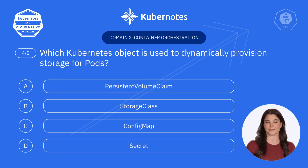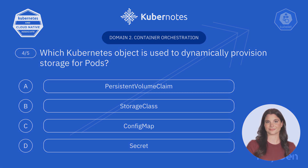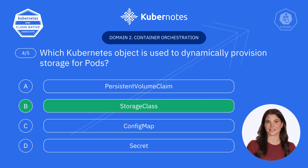Question four: Which Kubernetes object is used to dynamically provision storage for pods? A. Persistent volume claim. B. Storage class. C. Config map. D. Secret. The answer is B — Storage class. Storage class acts as a blueprint for dynamic storage provisioning, defining parameters like performance and access modes.